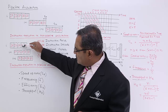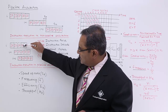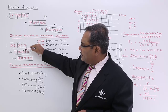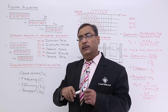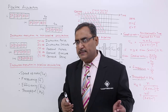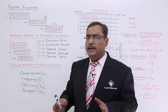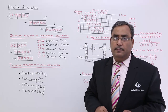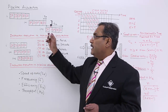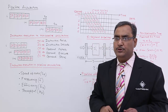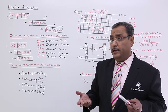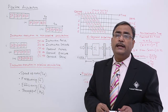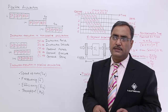If you consider any vertical time slot, you cannot find more than one instruction in the same phase — all instructions will be in different phases. So phase-wise there will be no contention. This is known as pipeline execution and that is known as non-pipeline execution. Obviously we can feel that in case of pipeline execution, the program will get executed faster.